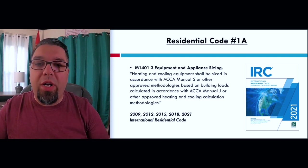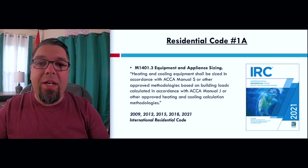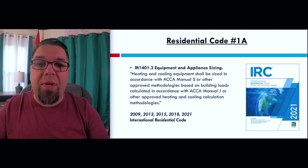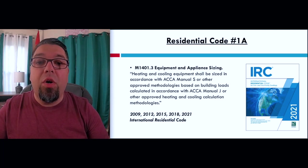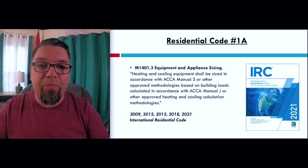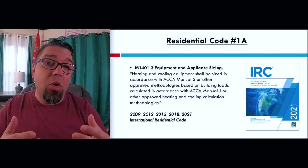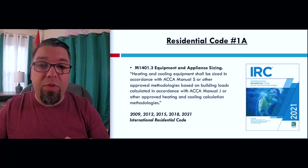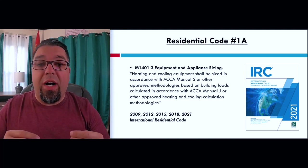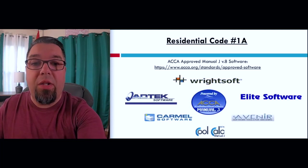So number 1A: heating and cooling equipment shall be sized in accordance with ACCA Manual S or other approved methodologies based on building loads calculated in accordance with ACCA Manual J or other approved heating and cooling calculation methodologies. Locally there's nothing else approved residentially than Manual J and Manual S, so you're going to have to find software — you can't do this by longhand.